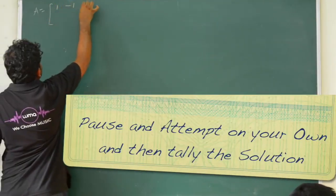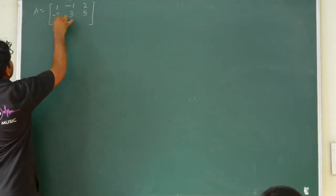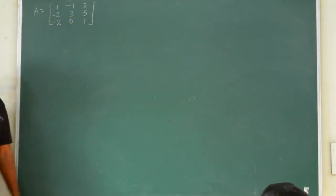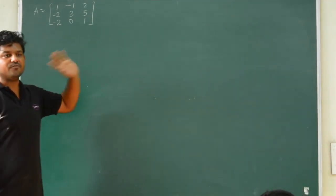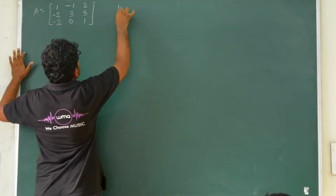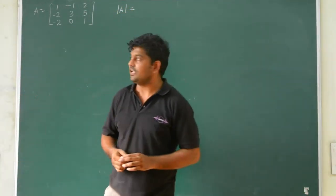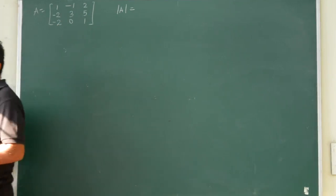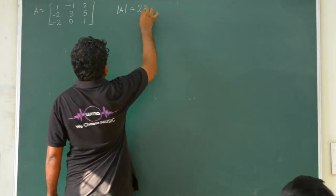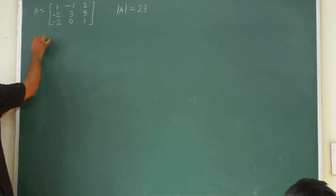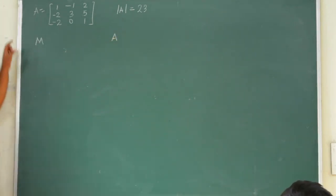Now we will solve another example using the cofactor method step by step. The given matrix is: 1, minus 1, minus 1, 2, minus 2, 3, 5, minus 2, 0. Again, starting step by step: find the determinant first. Minors are denoted by capital M and cofactors by capital A. Since there are 9 elements we will find 9 minors.